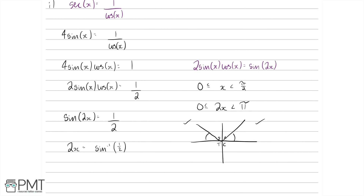So first, let's take the inverse sine of a half — making sure we're in radians — which gives us π over 6. That angle is π/6 in the first quadrant, and also π/6 in the second quadrant, giving two solutions: 2x equals π/6, and also π minus π/6, which is 5π/6.